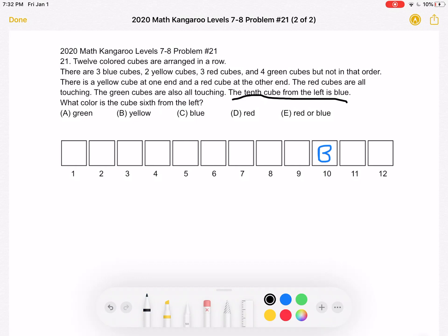Now we also know that there's a yellow cube at one end and a red cube at the other, and that the red cubes are all touching. Well, we can see that there's three red cubes. So the three red cubes cannot fit over here on this end because there's only two cube spaces over there. So the red cubes must all be at this end. So we can fill that in.